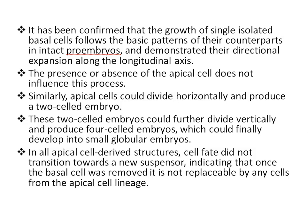The isolated apical cell could develop into an early embryo without the suspensor. It has been indicated that apical cells could divide horizontally and produce a two-celled embryo. These two-celled embryos could further divide vertically and produce four-celled embryos, which could finally develop into small globular embryos. In all apical cell-derived structures, cell fate did not transition toward a new suspensor, indicating that once the basal cell was removed, it is not replaceable by any cells from the apical cell lineage. This suggests that apical and basal cells have likely inherited different cytoplasmic contents from the zygote as a result of asymmetric zygote division, which provides a starting point for their different cell fate specification processes.